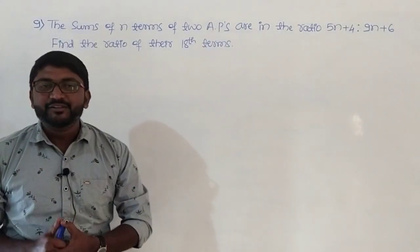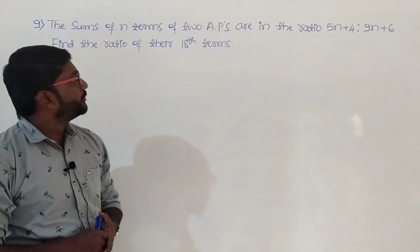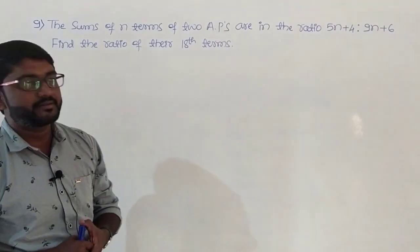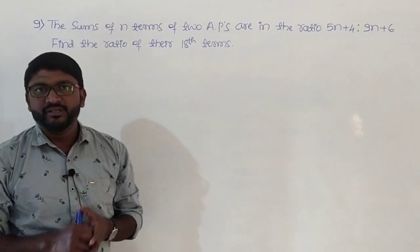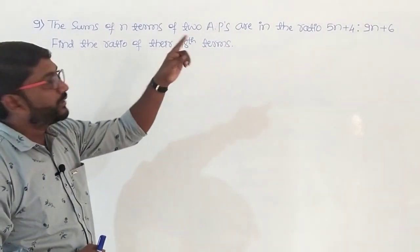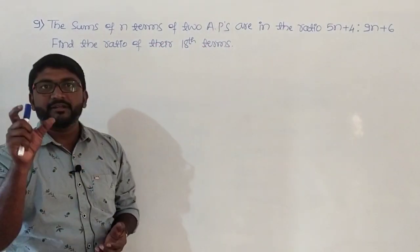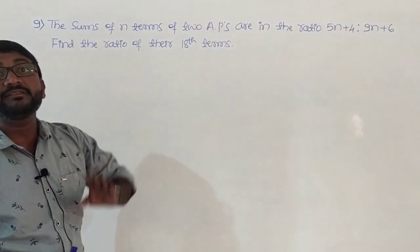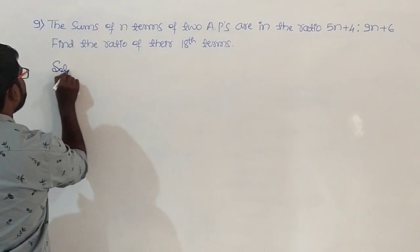The ninth problem: the sums of n terms of two APs are in the ratio 5n plus 4 to 9n plus 6. Find the ratio of their 18th terms. He is talking about the ratios of the sum of n terms of two APs, and the ratio is 5n plus 4 to 9n plus 6. We will have to find the ratio of their 18th terms. Let me write the given information.